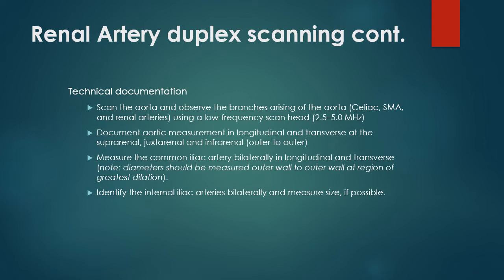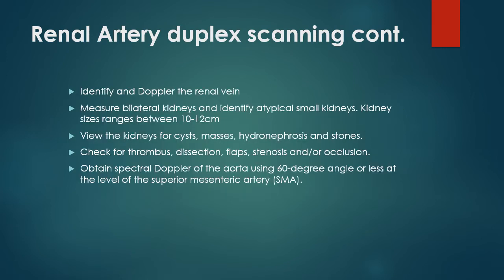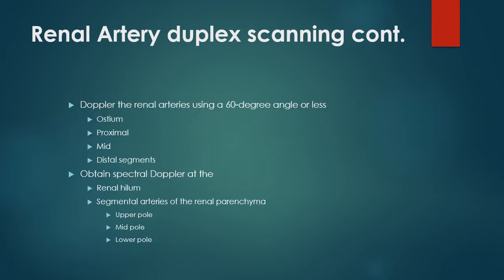When imaging the renal artery, first take a look at the aorta and rule out any abnormalities within it. Then image your renal artery. Identify and doppler the renal vein. Measure bilateral kidneys and identify atypically small kidneys — kidney sizes range between 10 to 12 centimeters. View the kidneys for cysts, masses, adrenal forces, and stones. Check for thrombus, dissection flaps, stenosis, or occlusion within the renal vein. Obtain spectral doppler of the aorta using a 60-degree angle or less at the level of the SMA, then doppler the renal arteries from the ostium through the proximal, mid, and distal segments.